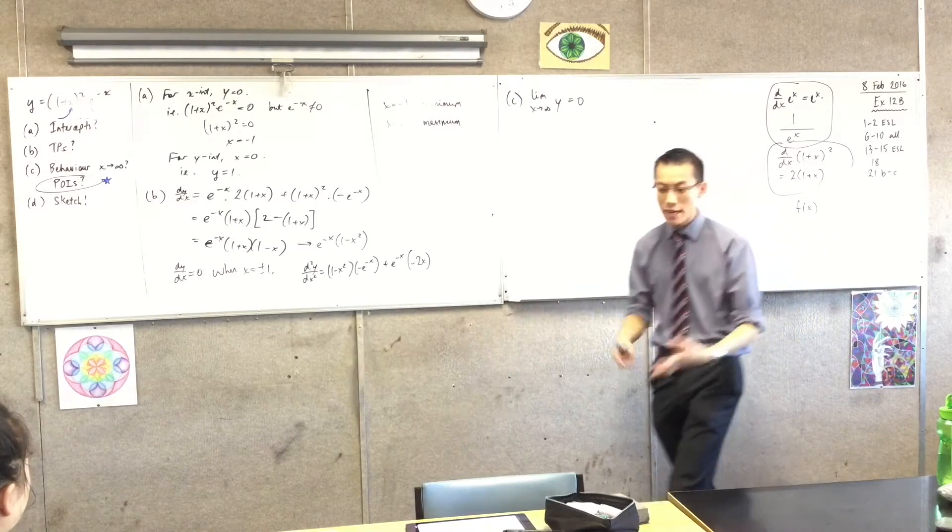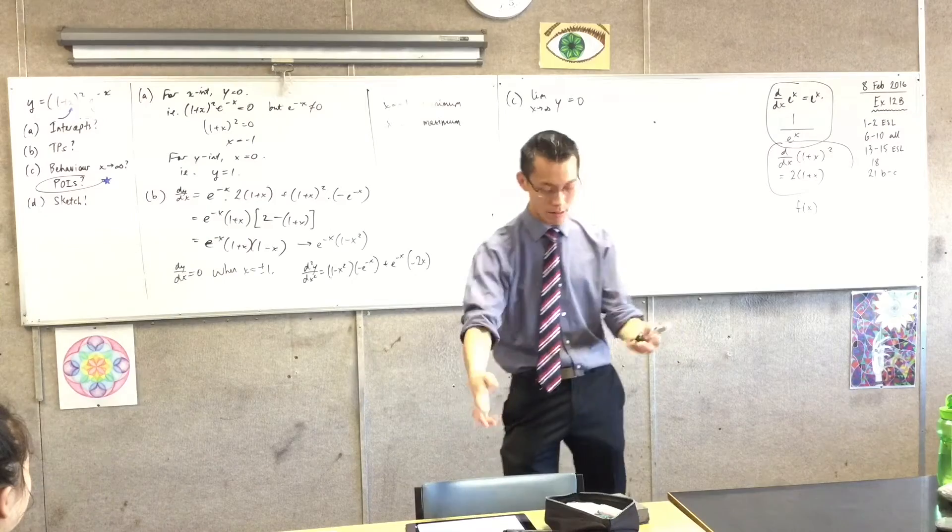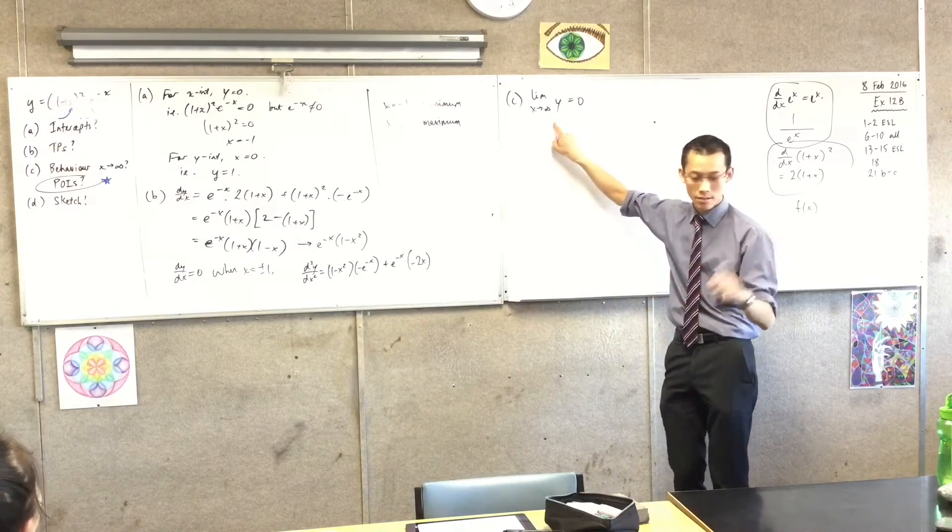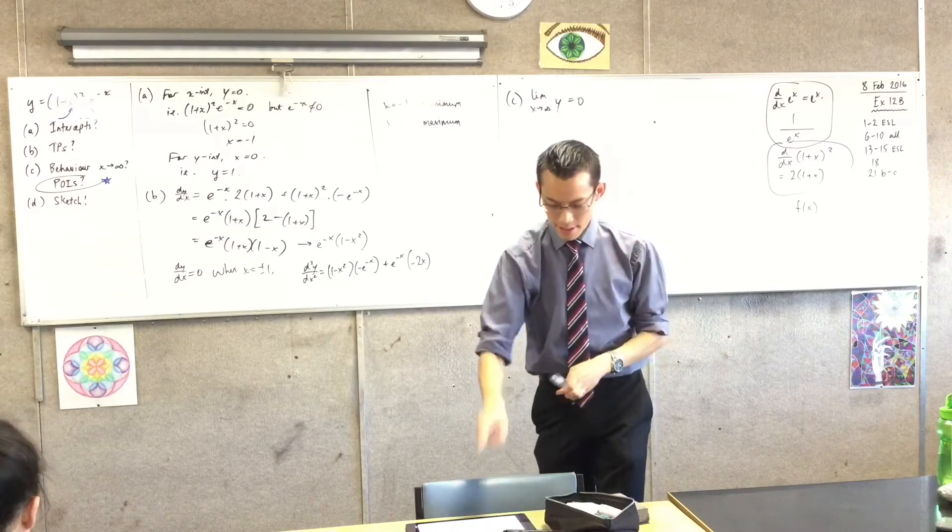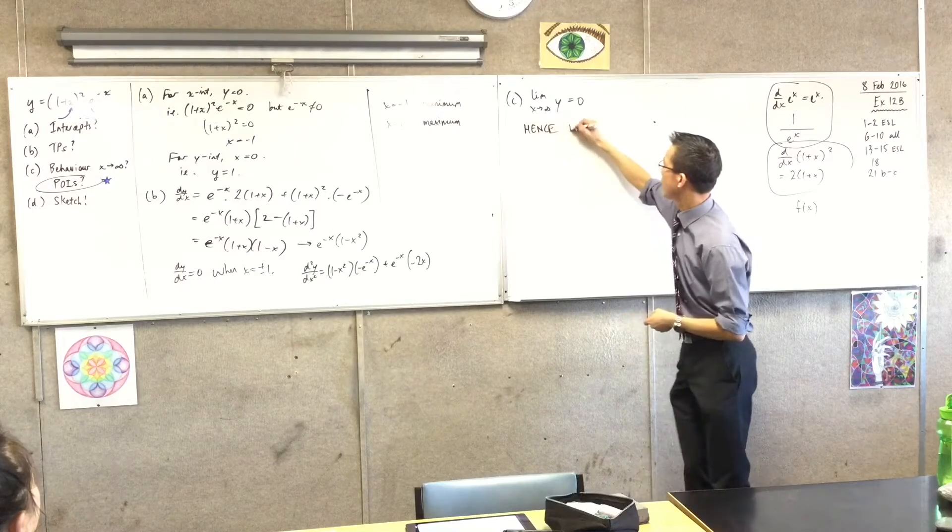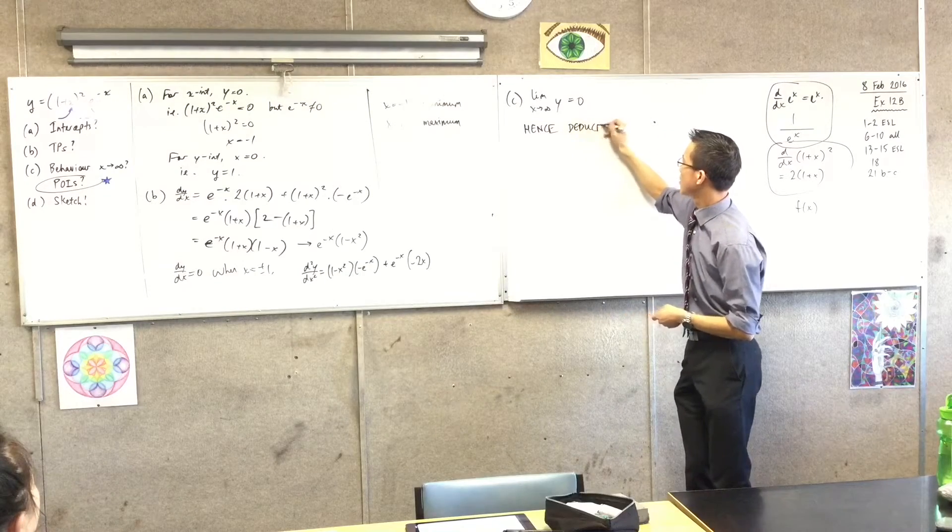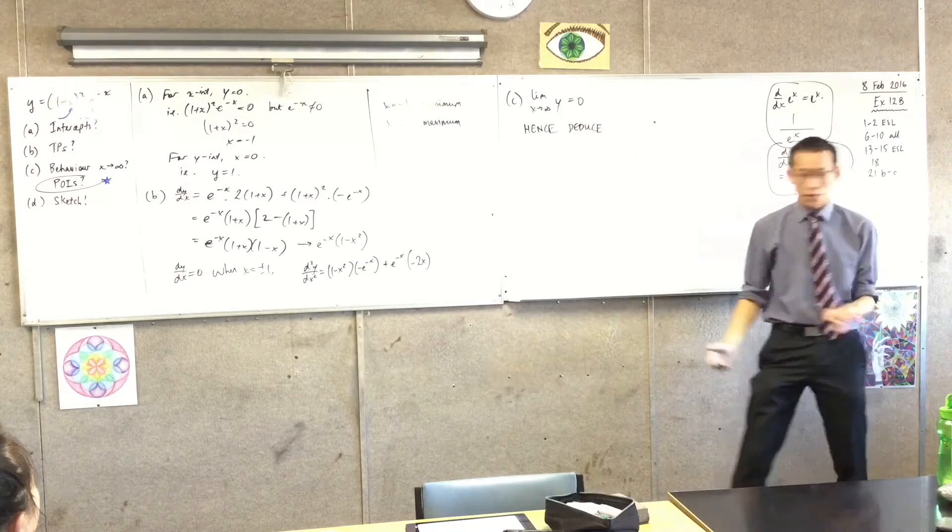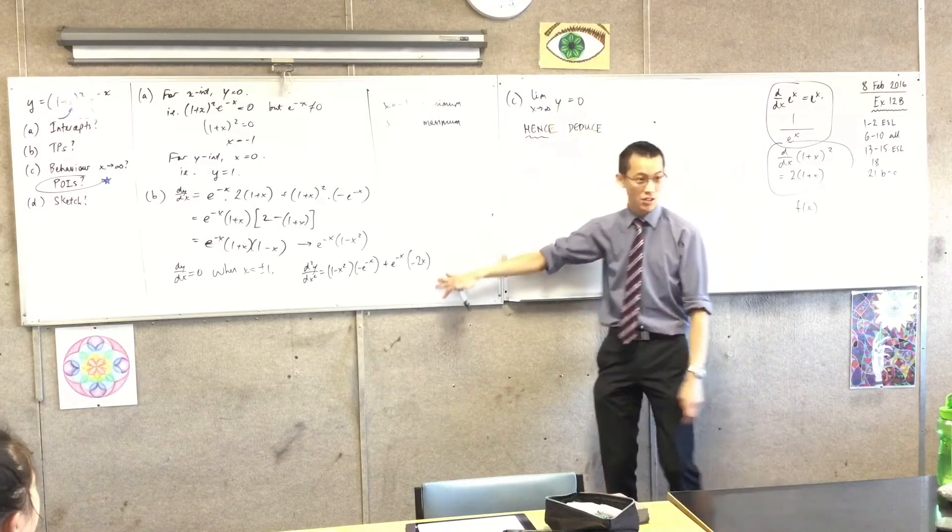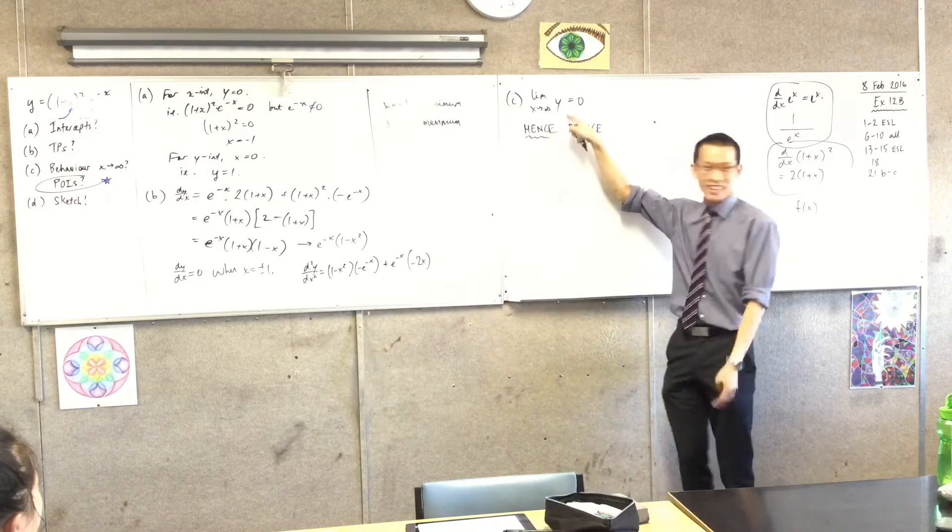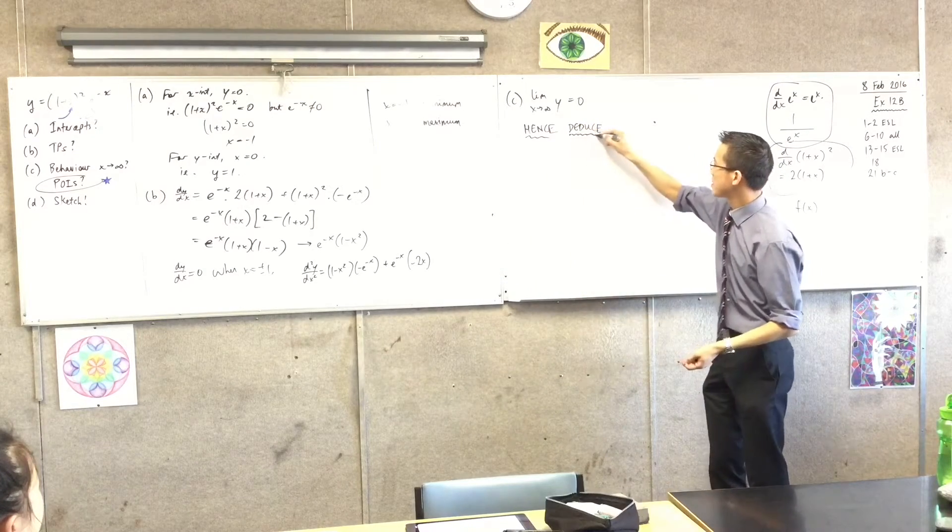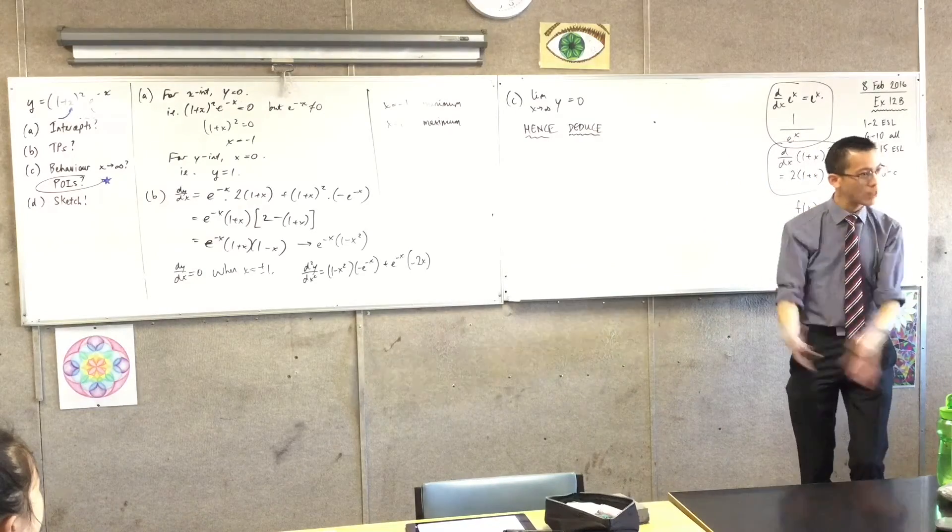But clearly, let me read the wording for you again because you'll get questions like this. Examine the behavior of y as x approaches infinity, done, and hence deduce. You have two words there that kind of fence you in. Hence - did you write it? So the first thing that hence means you have to use this in some way, and appealing to the second derivative pretty much ignores this. Like I don't need this fact to use the second derivative.